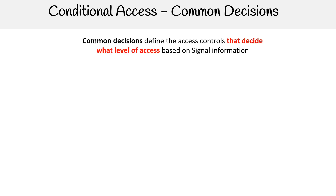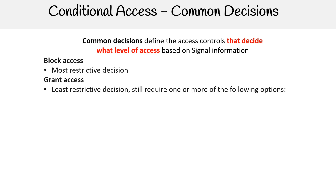Let's talk about common decisions. These define the access control — what level of access based on the signal information. These are those common decisions. We have block access, which is the most restrictive decision. Then you have grant access, which is the least restrictive decision, but still requires one or more of the following options.